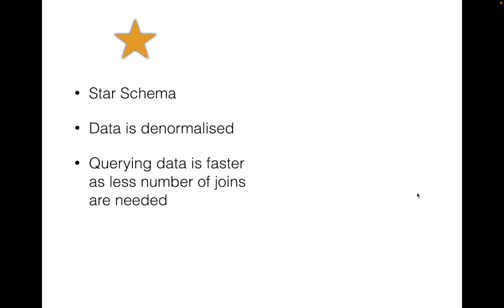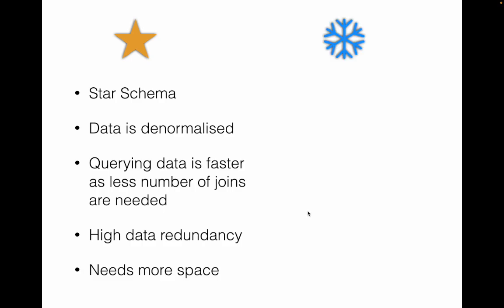The advantage of denormalization in a star schema is that you have fewer tables to join, so queries are less complicated and executions are faster. However, you end up with data redundancy — for example, if you need to update a manufacturer's address, you have to update every product record that contains that manufacturer address column.